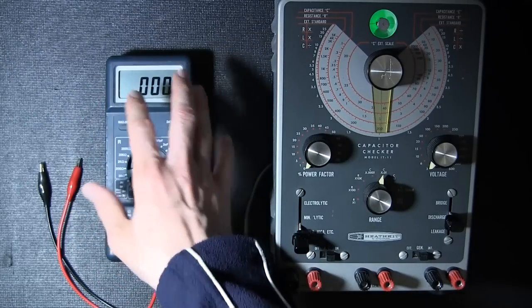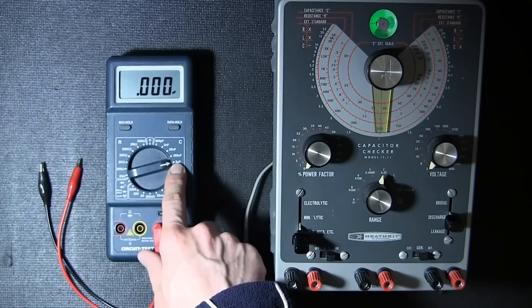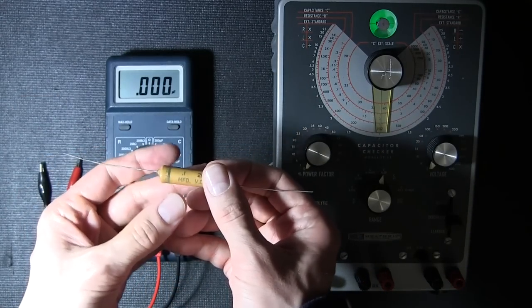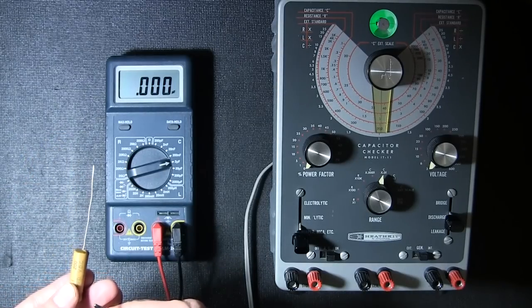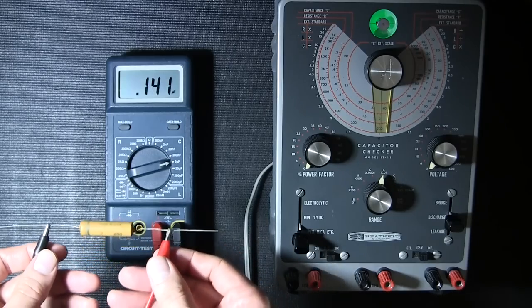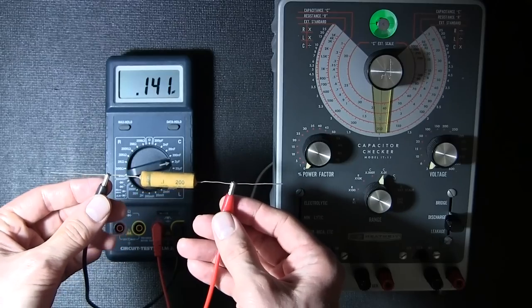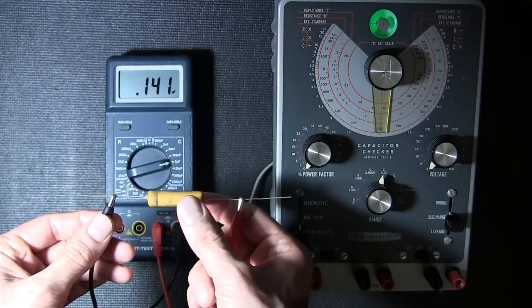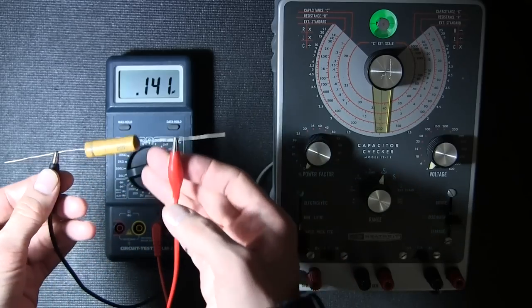The capacitor tester here is set to 2 microfarad scale because this capacitor is rated at 0.1 microfarad. I'll just clip the test leads onto the capacitor. As you can see it's reading 0.14 so one might think that this capacitor is actually a little bit of an overachiever. So it looks good on this tester.